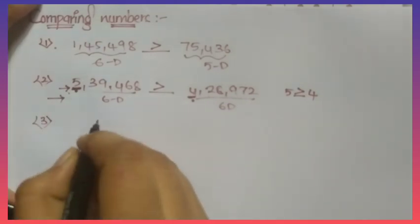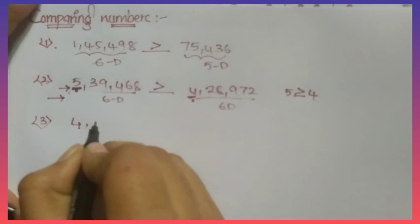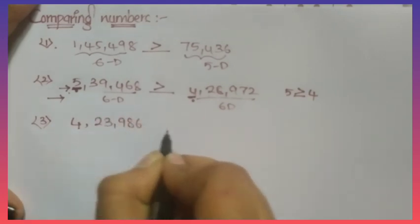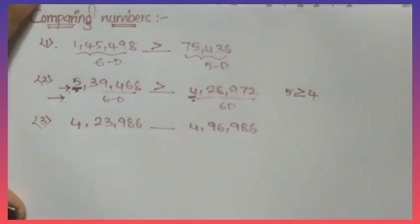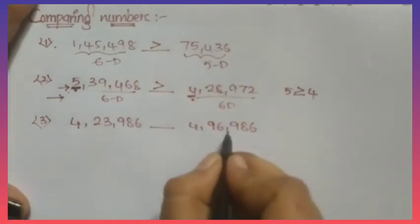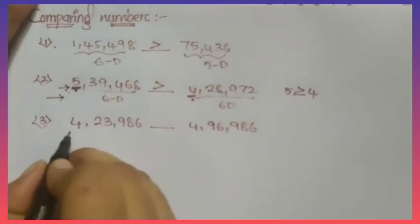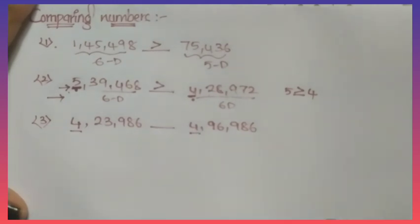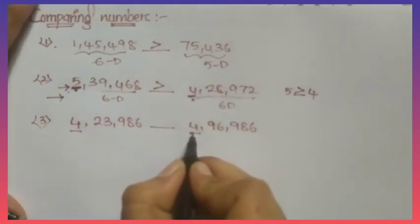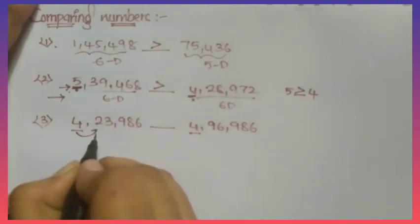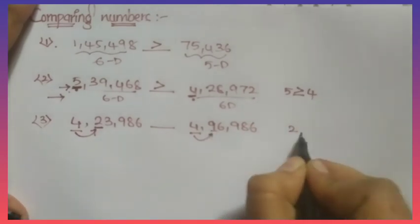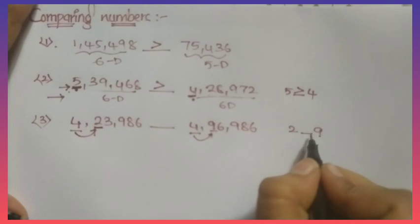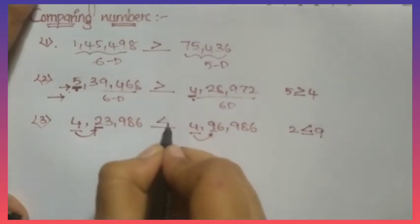Look at the third example: 4,23,986 and 4,96,986. Both have the same number of digits and the lakhs digit is also the same (4). If the lakhs place is the same, we compare the ten-thousands place. The digit here is 2 and here it is 9. Between 2 and 9, which is greater? 9. So 2 is less than 9, and we place the less-than symbol here.